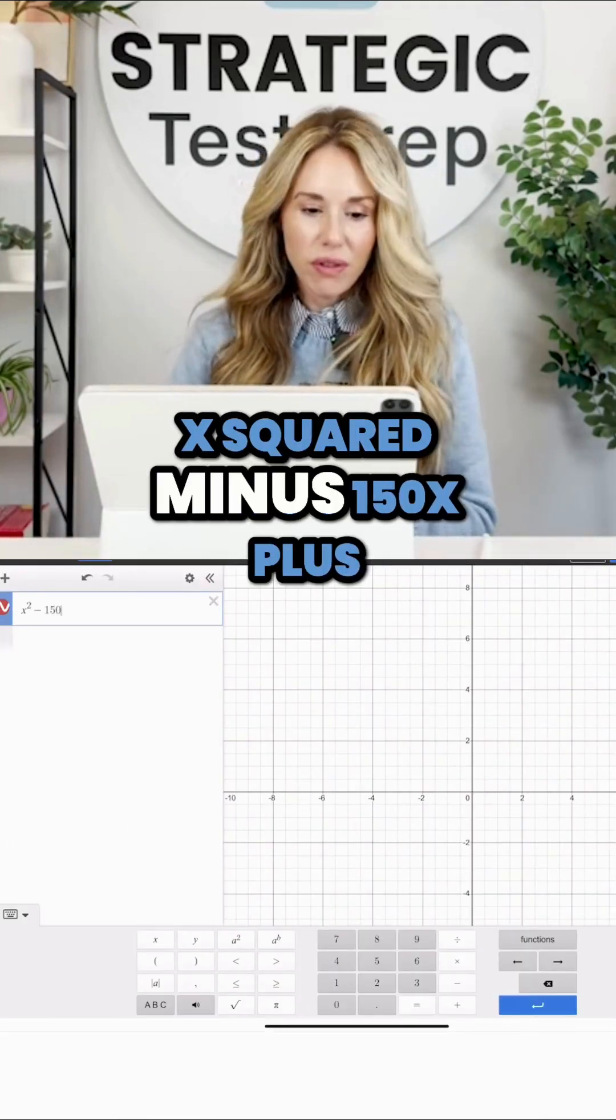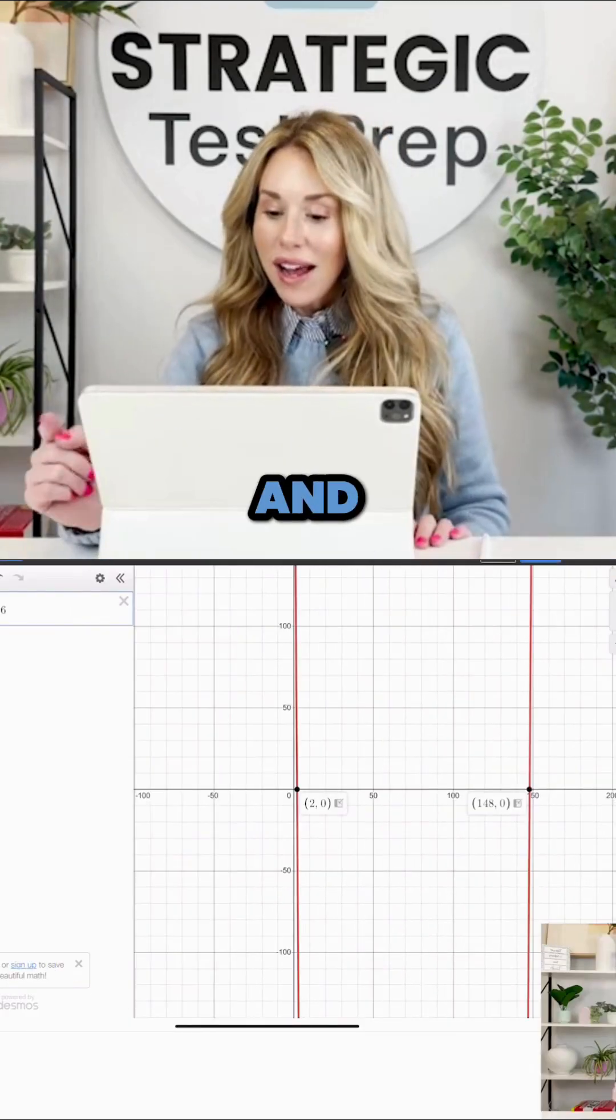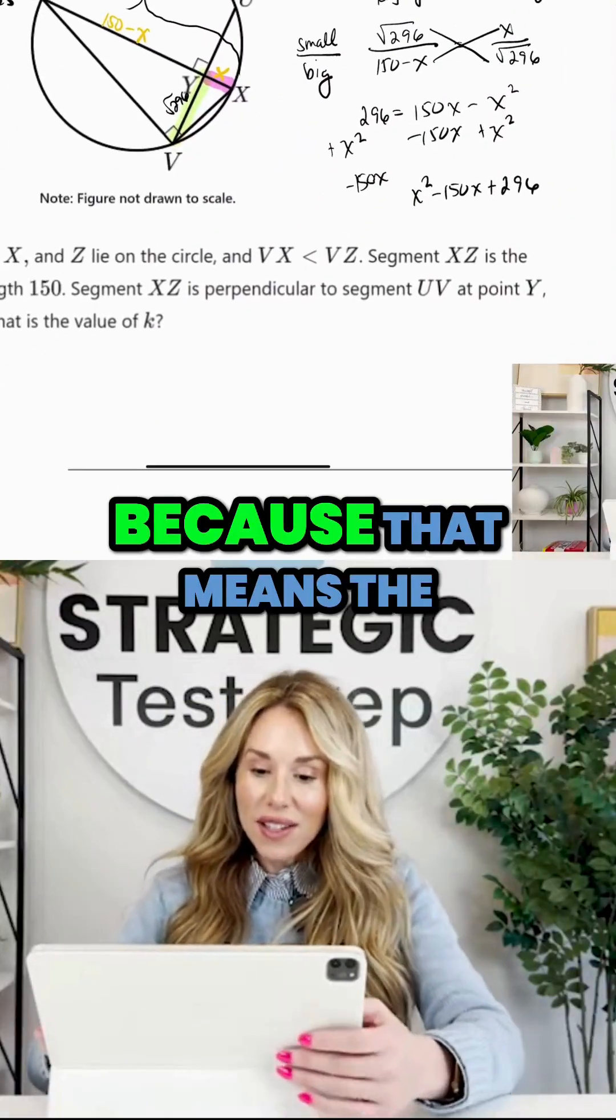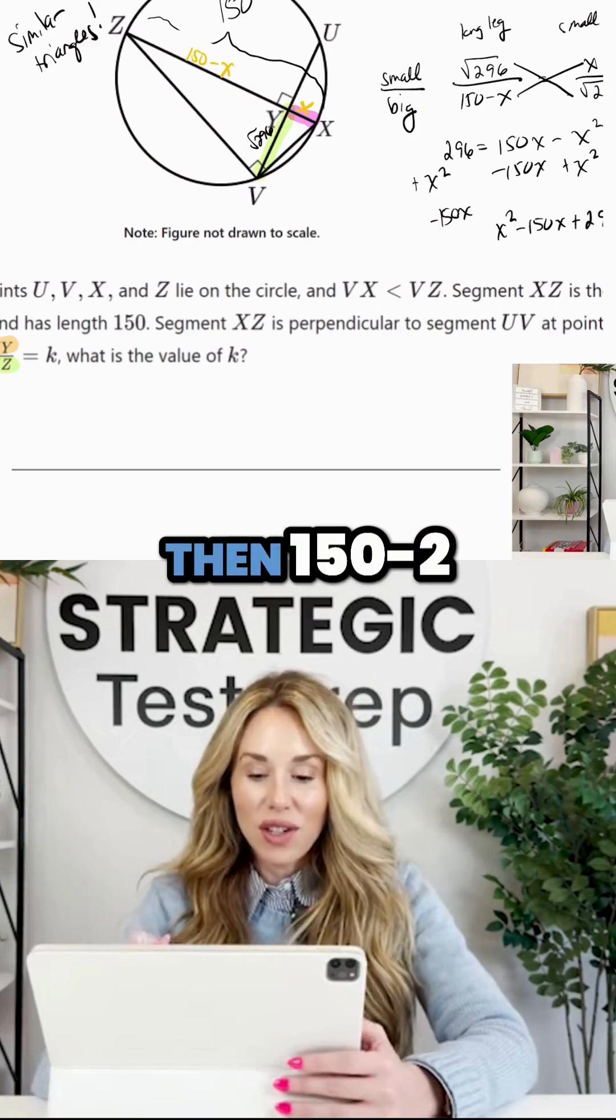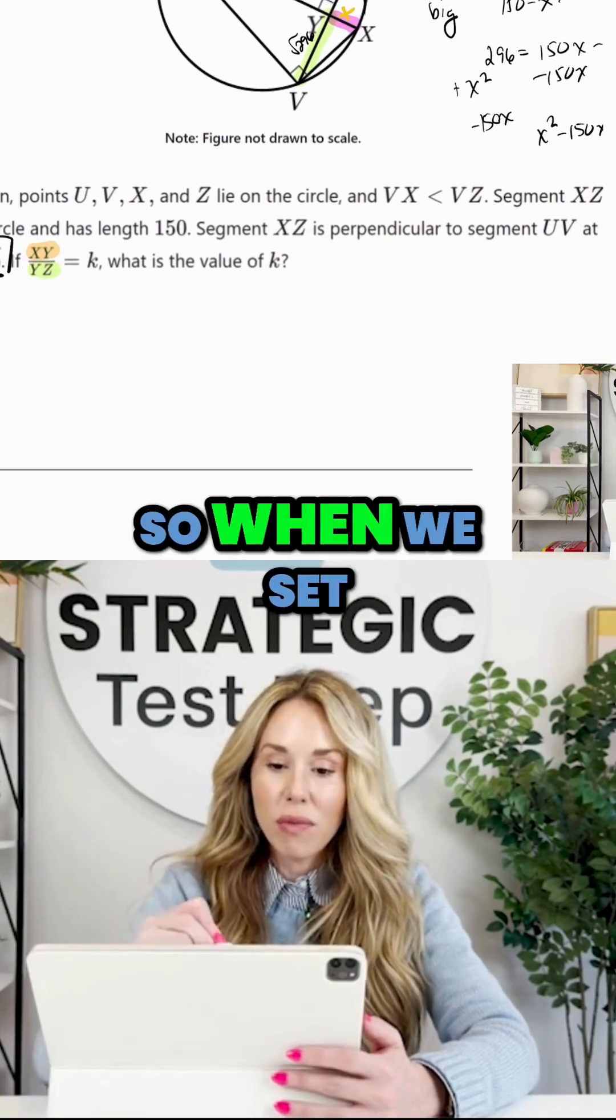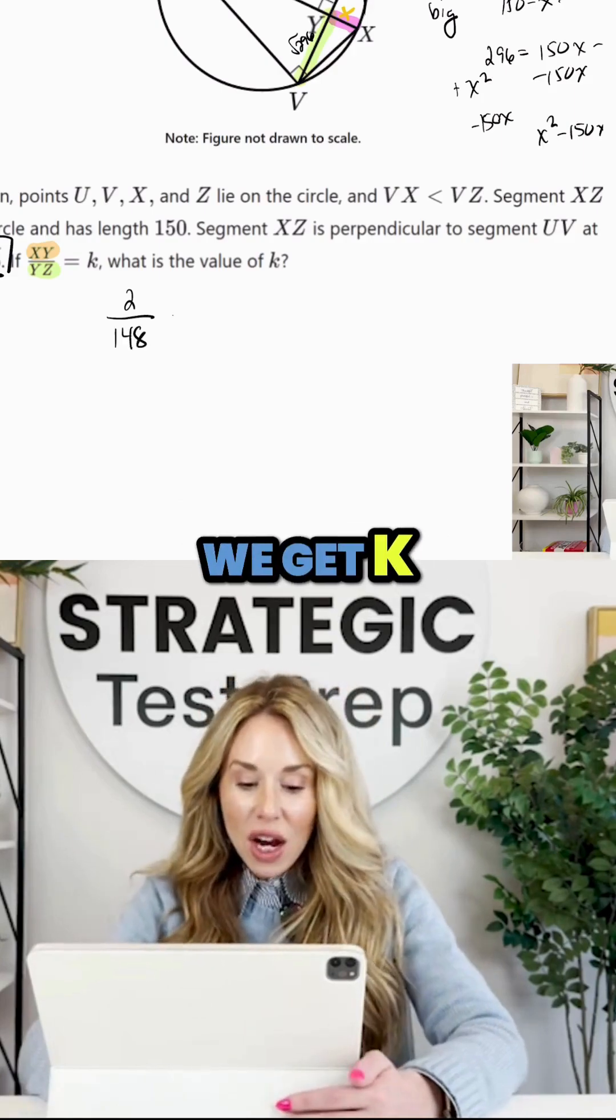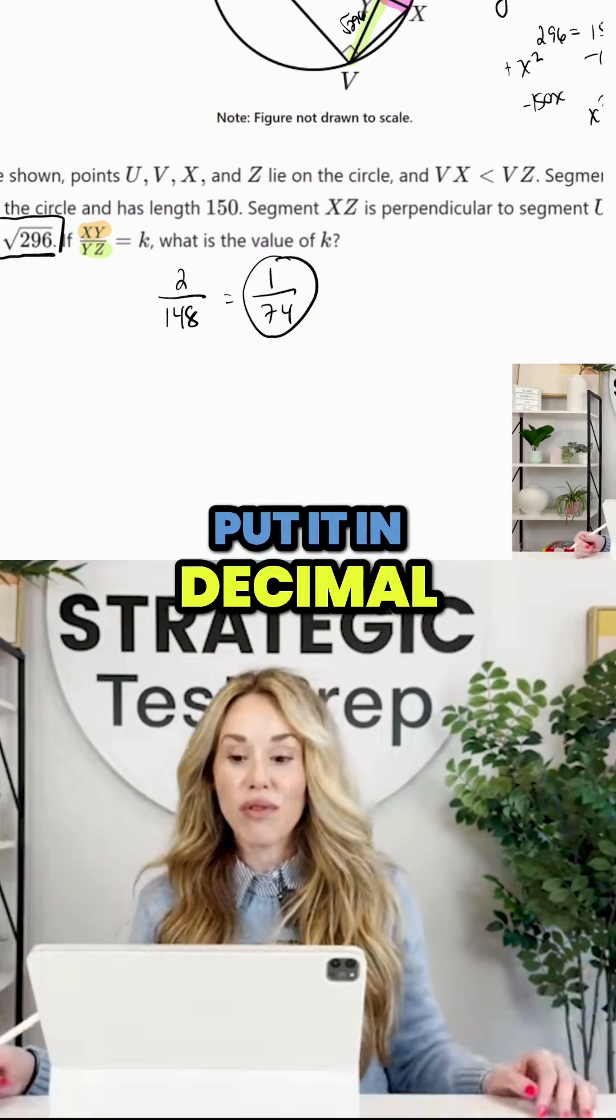All right, let's zoom out. So we have one solution at two and another one at 148, which makes perfect sense because that means that XY needs to be the two and then 150 minus two, so that YZ is 148. So when we set XY, which is two, over YZ 148, we get K. You can simplify that down to one over 74, or you can put it in decimal form if you want.